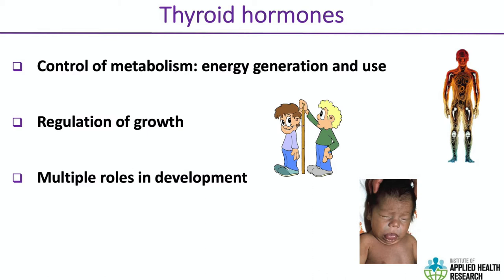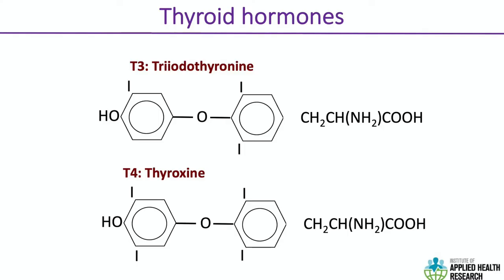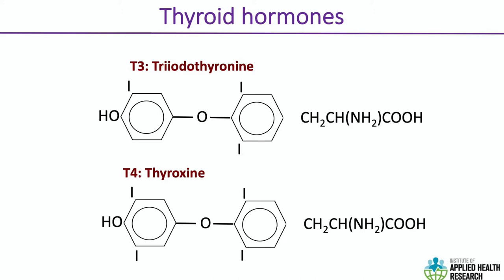Thyroid hormones are very important. They control our metabolism, helping balance energy generation and use. They are crucially important to growth and development, and we know that thyroid hormone deficiency in utero results in cretinism. The two thyroid hormones we're most interested in are thyroxine and triiodothyronine. Thyroxine, or T4, has four iodine residues, while T3 has three iodine residues, as shown in the chemical formula.